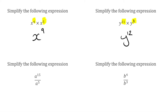For the next question, we've got a to the power of 15 divided by a to the power of 5. Because we're dividing, we're going to subtract this time. So 15 take away 5 is 10, and our final answer for this one would be a to the power of 10.